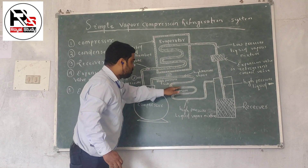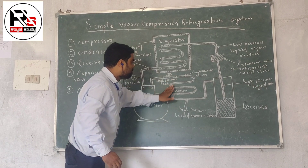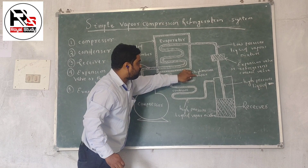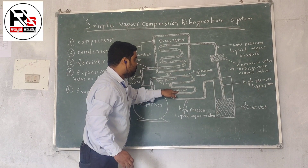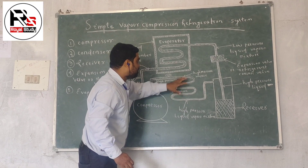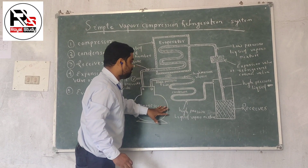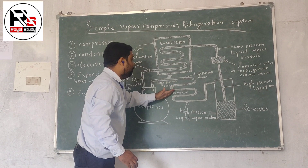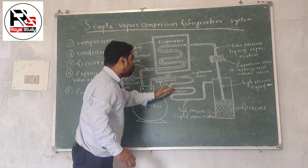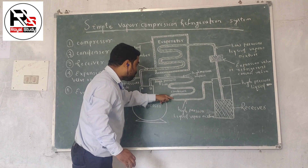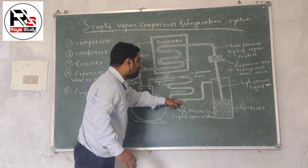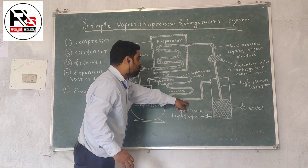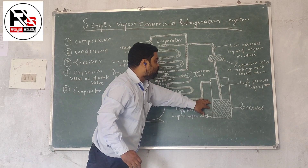The condenser is where the high pressure refrigerant is condensed. After the high pressure vapor comes to the condenser, the condenser condenses the high pressure vapor. Then it gives off latent heat to the surrounding medium — that is, air or water. After condensation, the liquid-vapor mixture at high pressure is stored into a receiver.